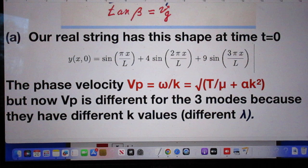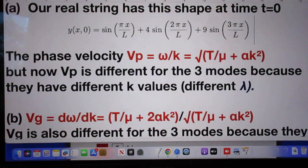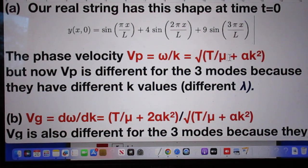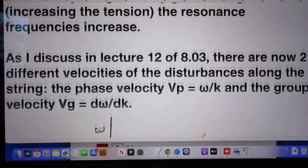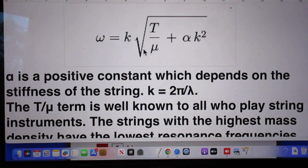Our real string has this shape at time t equals zero. The phase velocity is omega divided by k. And that's this. Utterly trivial, because go back to this function. Omega divided by k is this function.